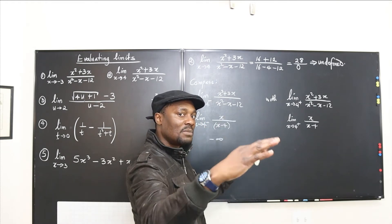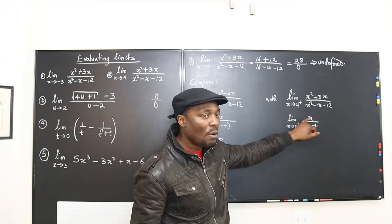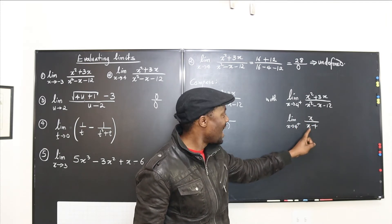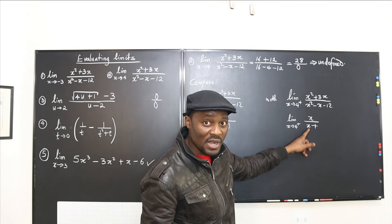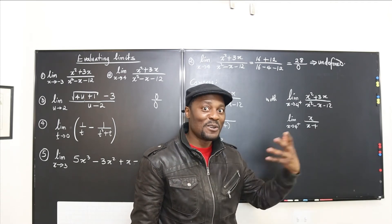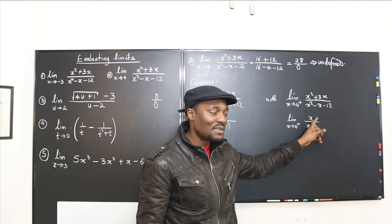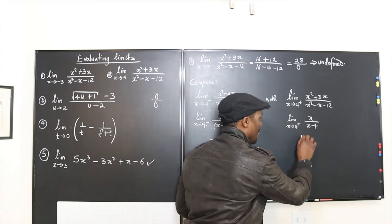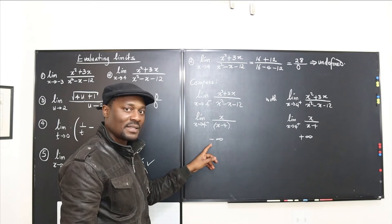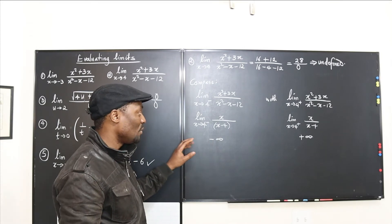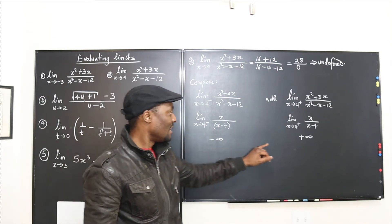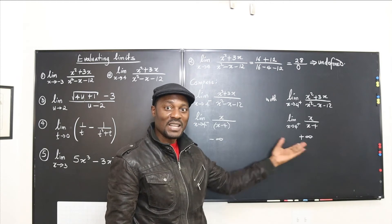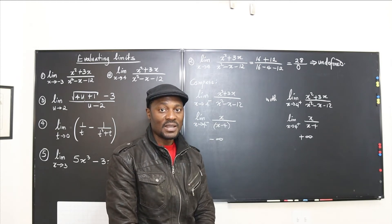Coming to 4 from the right on the number line, that number must be bigger than 4 — like 4.000001. Then 4.000001 minus 4 gives a tiny positive number. You're dividing by a tiny positive number, so everything approaches positive infinity. The limit from the left is negative infinity and the limit from the right is positive infinity.